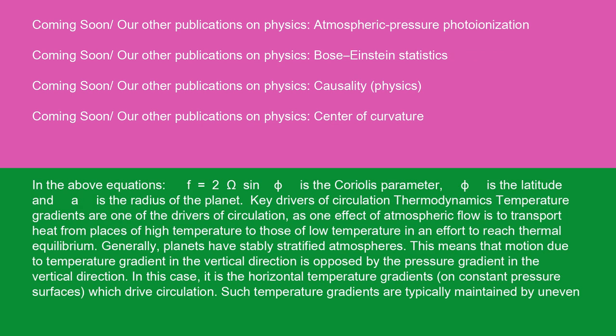In the above equations, f = 2Ω sin φ is the Coriolis parameter, φ is the latitude, and a is the radius of the planet. Key drivers of circulation - thermodynamics: temperature gradients are one of the drivers of circulation, as one effect of atmospheric flow is to transport heat from places of high temperature to those of low temperature in an effort to reach thermal equilibrium.